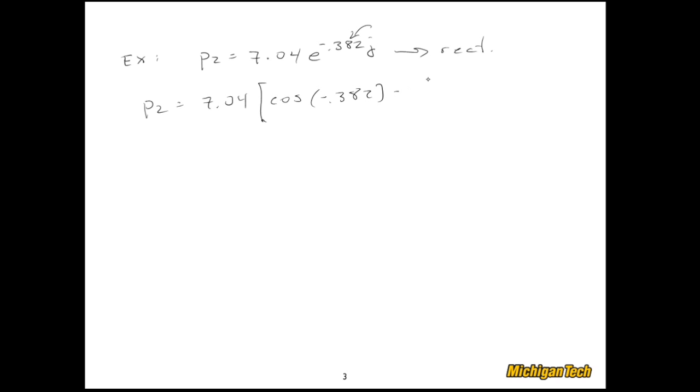Actually, I could just say cosine 0.382 minus j sine of 0.382. And I'm done. So now let's do one more example.